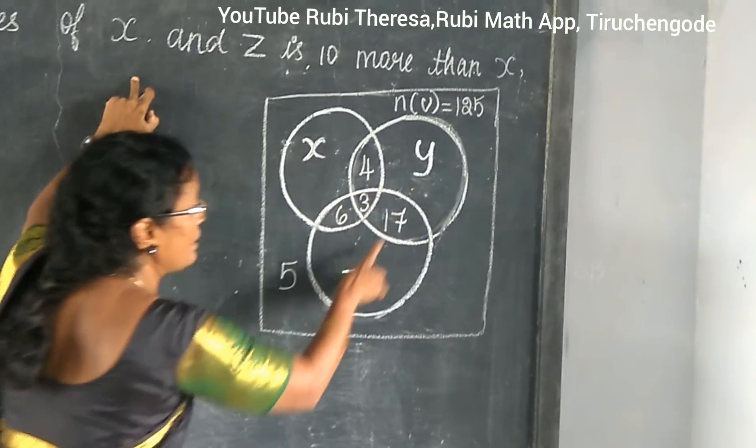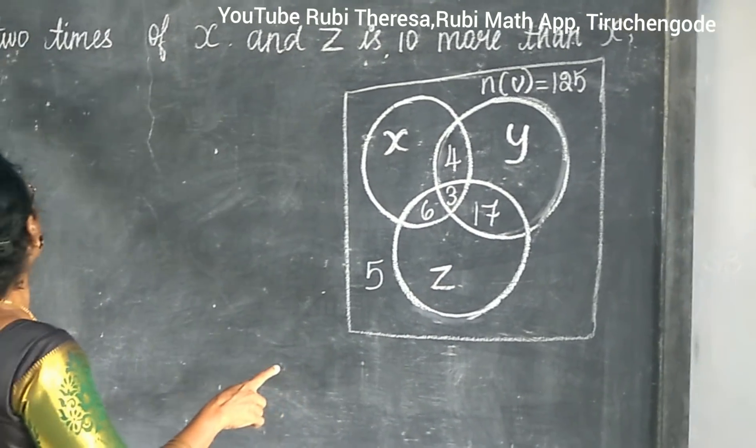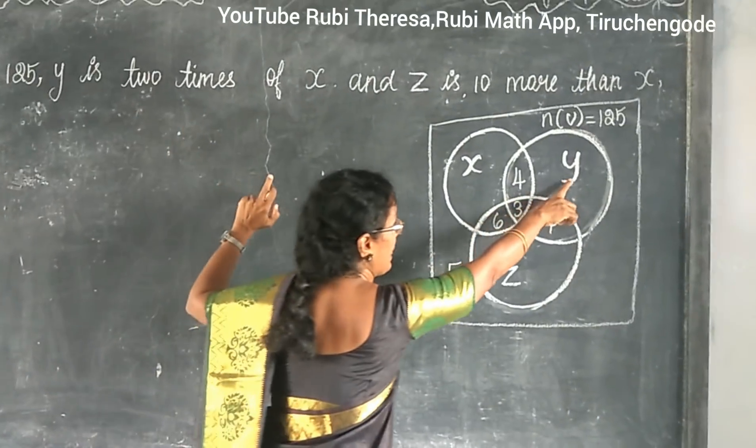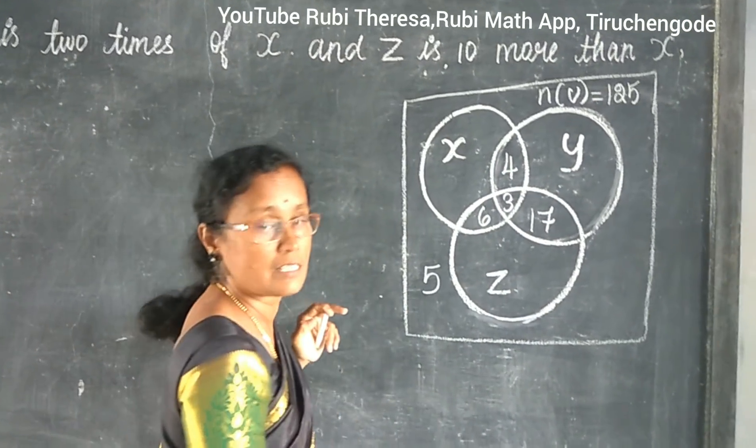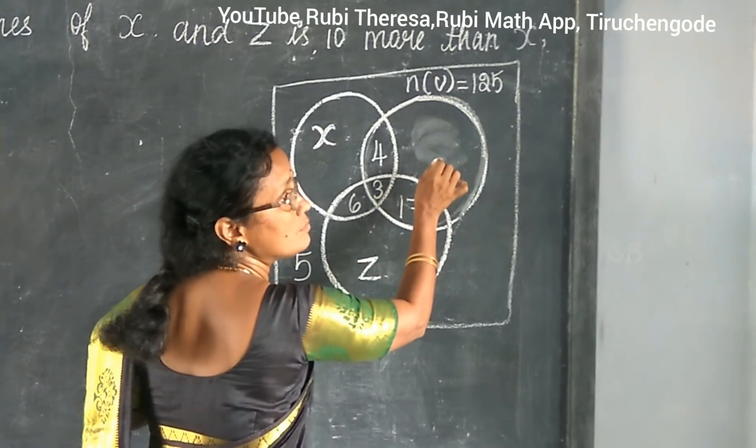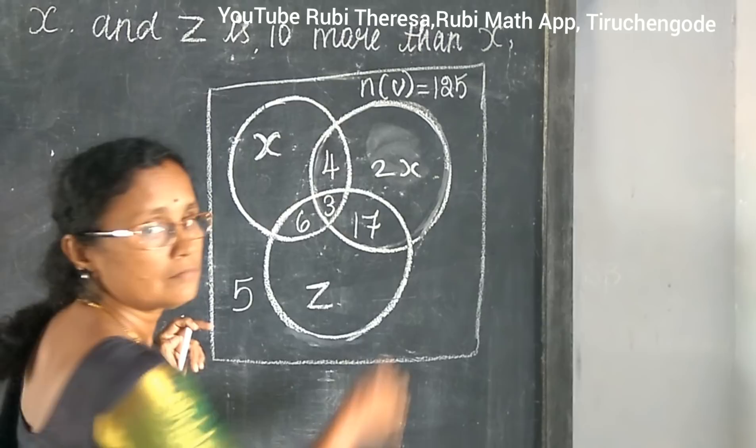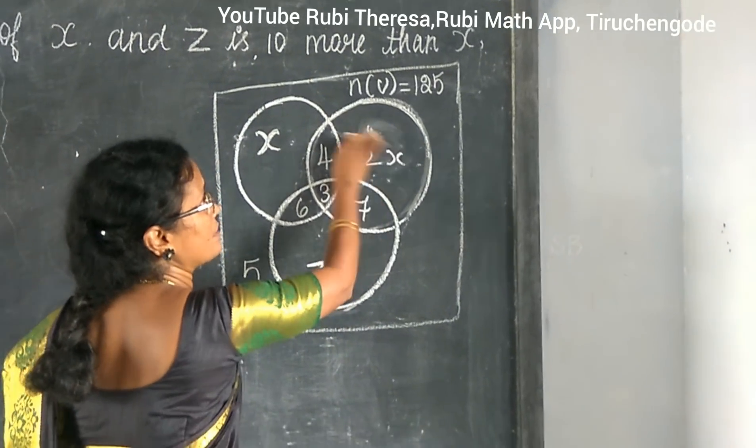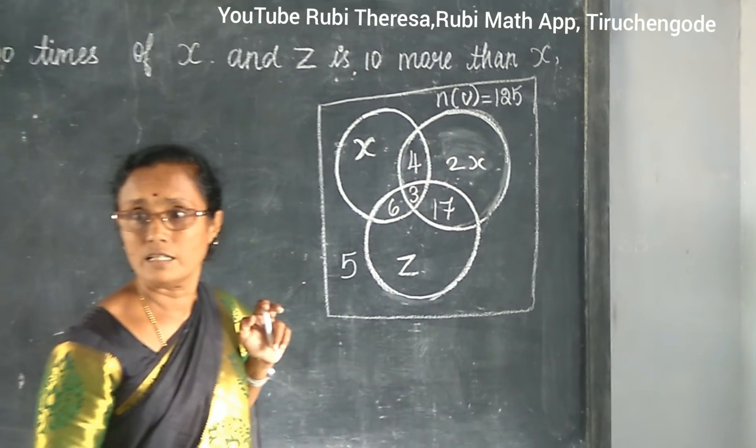Y is X. But they now say Y is 2 times of X. So instead of Y, what can you write? 2X. Y equal to 2X. Do you follow?